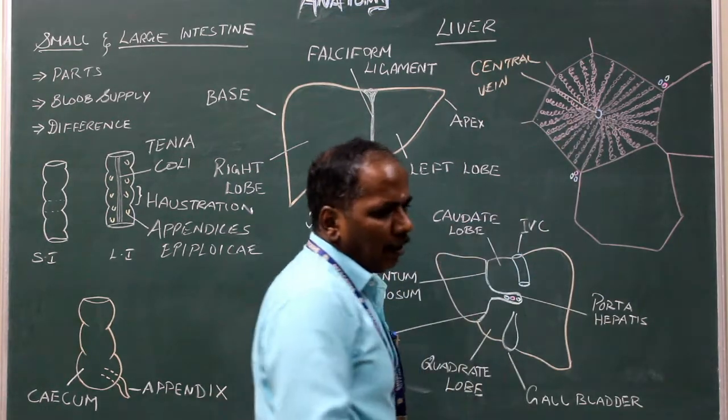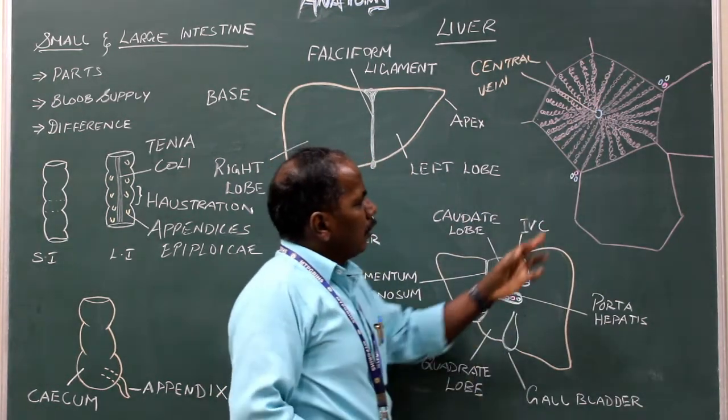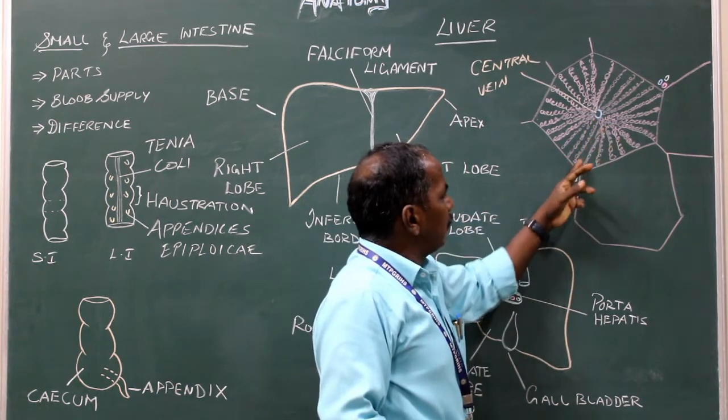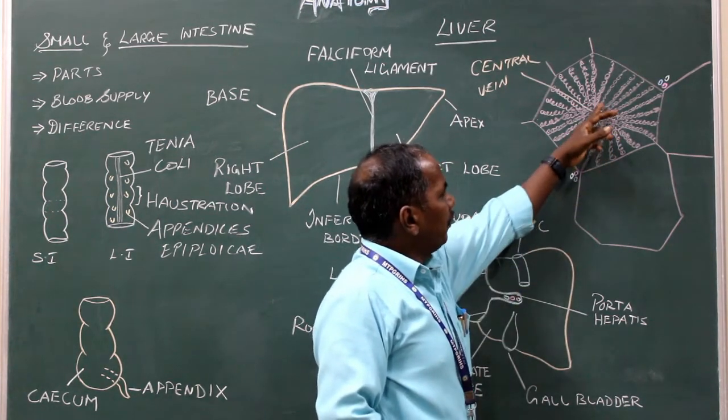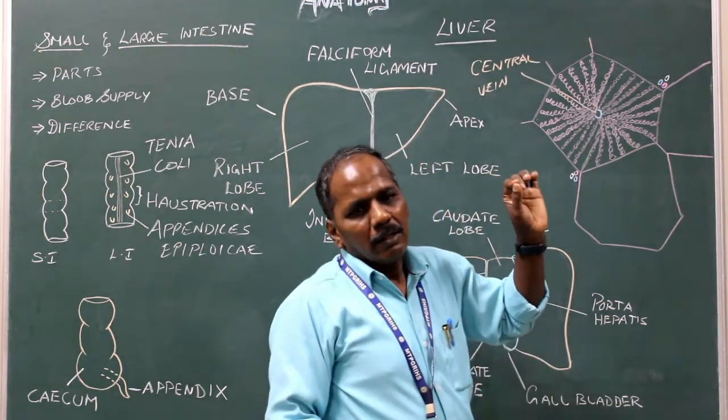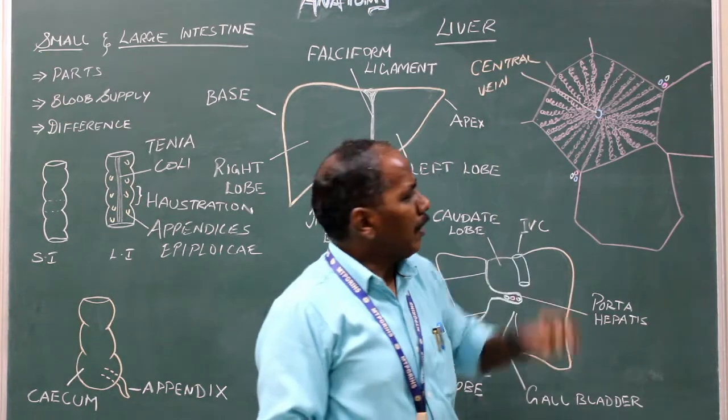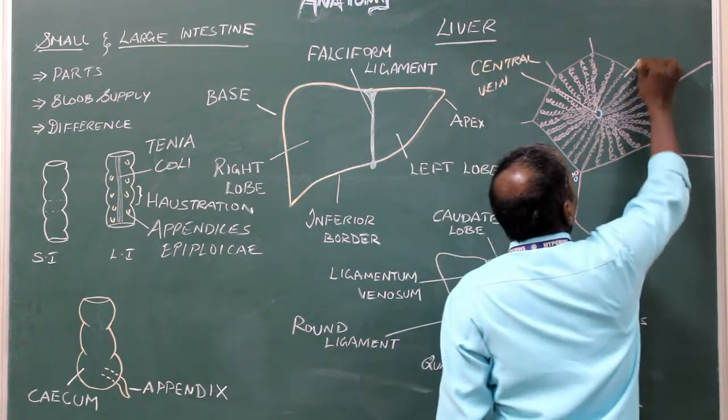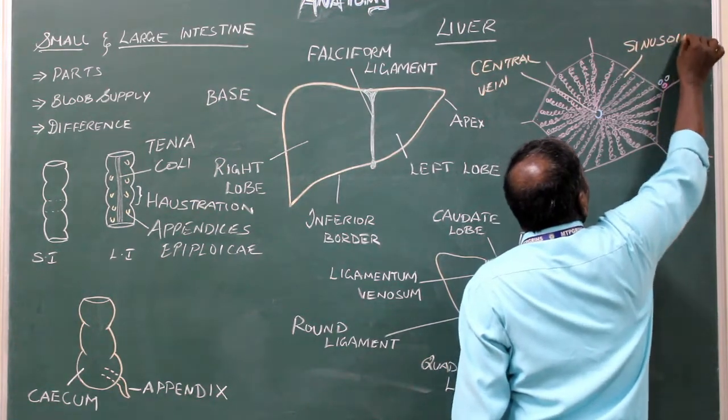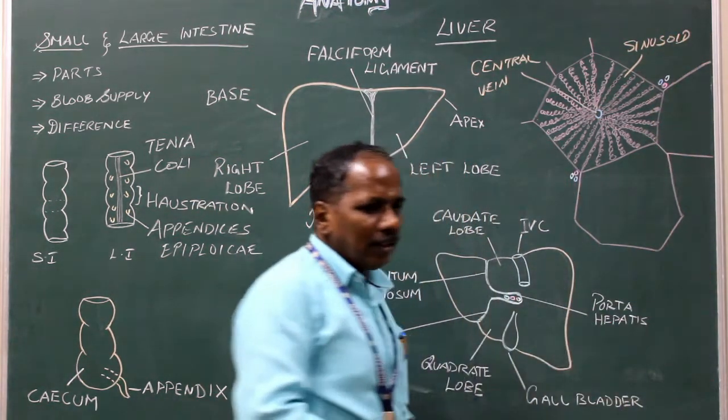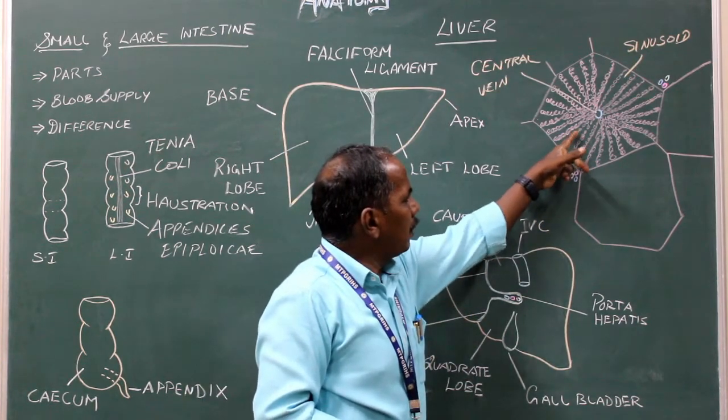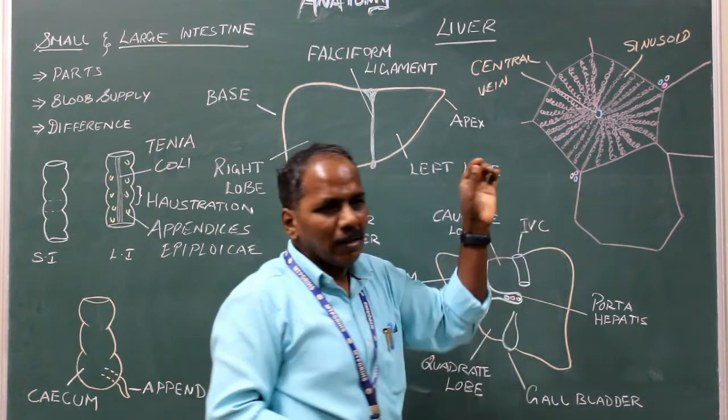From the central vein you can see radiating spaces. There are spaces running radially. So from the central vein there are radiating sinusoids. The sinusoids are lined by, see this, this is sinusoids, it is lined by cells, rows of cells.